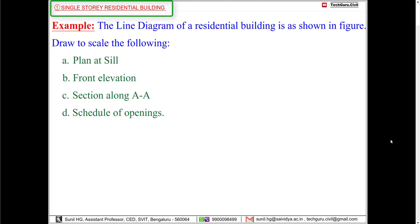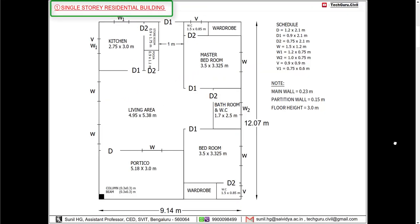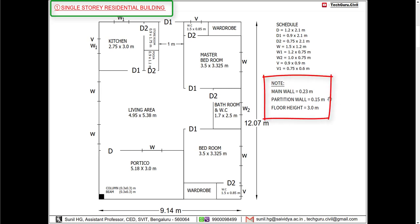In this example, the line diagram of a residential building is given. We need to draw the following things with respect to scale: the plan at sill level, front elevation, and sectional elevation along section AA. Here is the line diagram of total dimension 9.14 by 12.07 meters, consisting of several rooms where internal dimensions are provided. It has two wall thicknesses — main wall will be 0.23 meter, partition wall will be 0.15 meter, and the floor height is 3 meters.